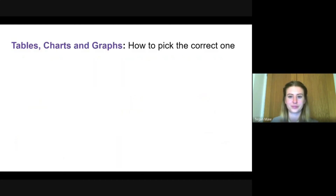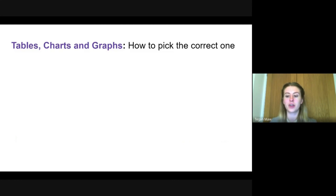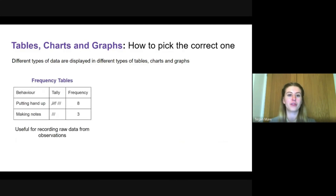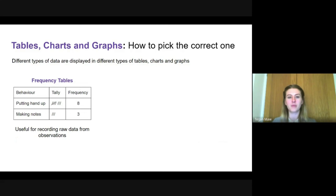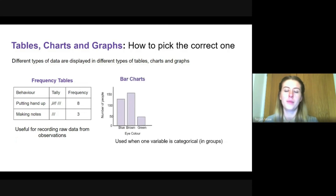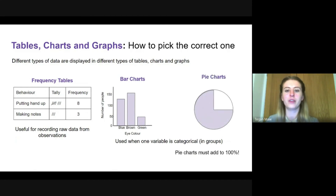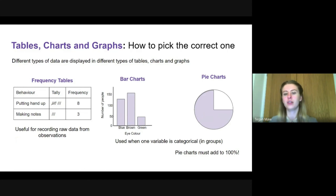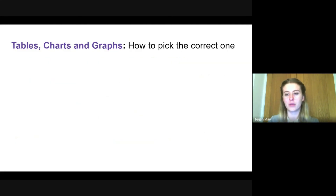Different data can be represented by different graphs, and some are more appropriate than others. Frequency tables are useful for recording broad data from observations, typically used for categorical variables — variables you cannot assign numbers to, such as behaviors like putting a hand up or making notes. Bar charts and pie charts are both used when one variable is categorical. For example, eye color — you can't assign a number to blue, brown, or green — is plotted against number of people. Ensure your pie chart adds up to 100% and each segment is labeled.